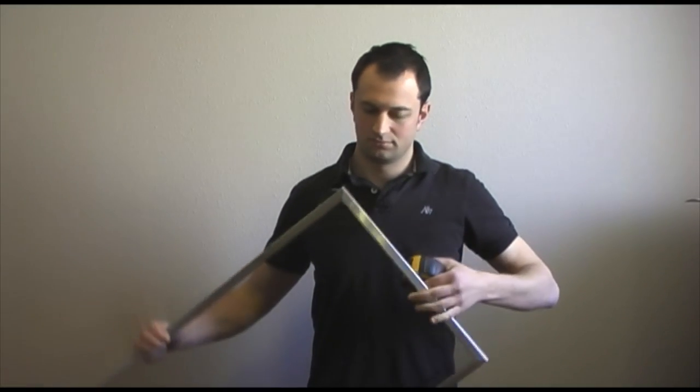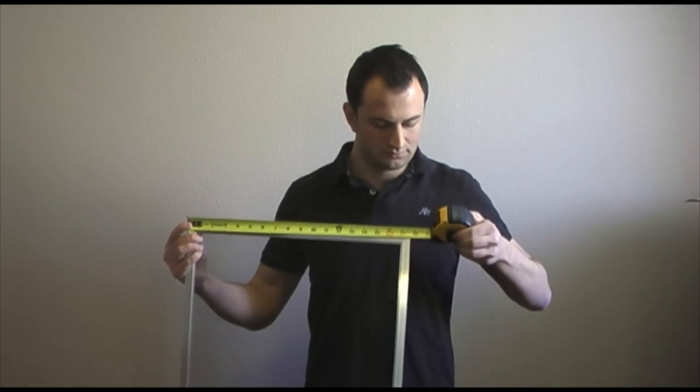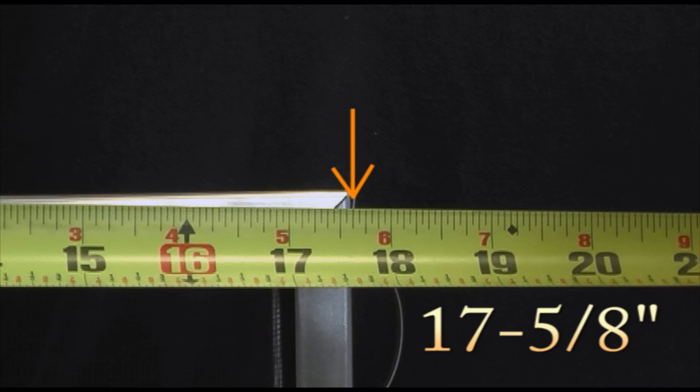Now take your screen's shortest side measurement. This as well you will need to measure to the nearest fraction of an inch. This particular screen measures 17 and five eighths. Please allow a sixteenth of an inch tolerance in the manufacture of all screens.